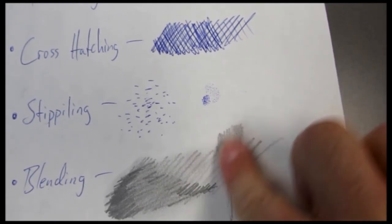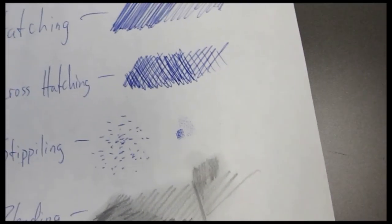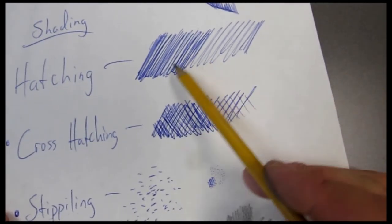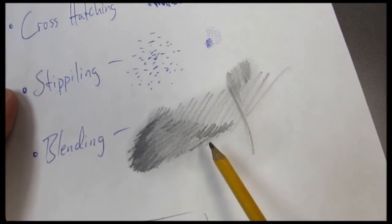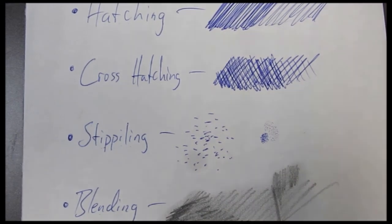Alright. Impress me. Let me see what you got. Alright. We got our four styles down. We know how to shade. We know what we're doing. Hatching. Cross hatching. Stippling. Blending. Diagonal lines. Crossing back over. The dot thing. And the smear thing. That's the four styles. Make sure you got it covered. See you guys later.